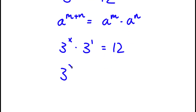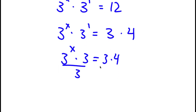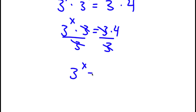Now, 12 we can also rewrite as 3 times 4. So now I have 3 to the power of x times 3 to the power of 1 is equal to 3 times 4. Now 3 to the power of 1 is the same thing as 3, so I have 3 to the power of x times 3 is equal to 3 times 4. All I have to do is divide both sides by 3 — these two cancel out — so now I'm simply left with 3 to the power of x is equal to 4.